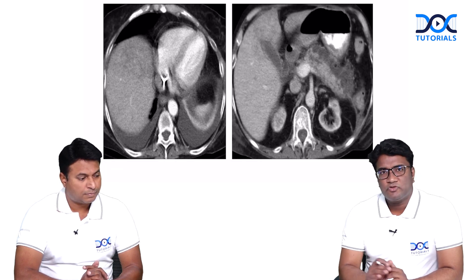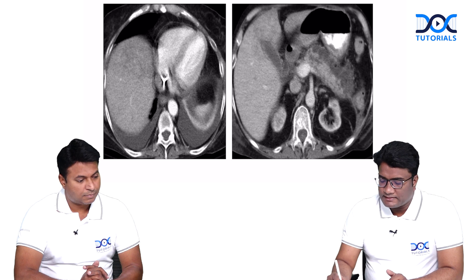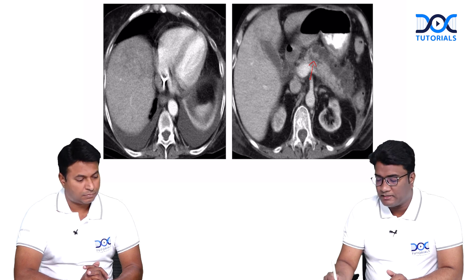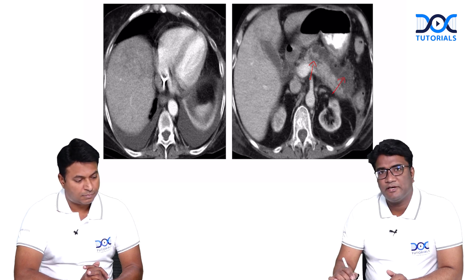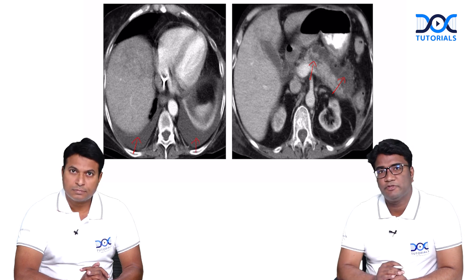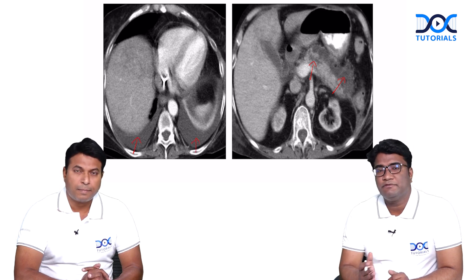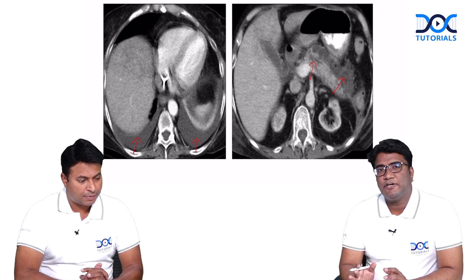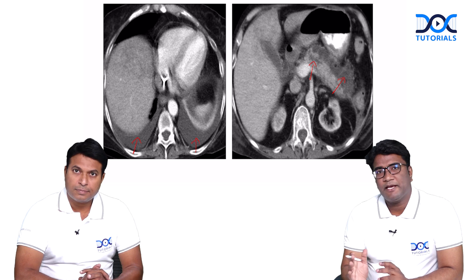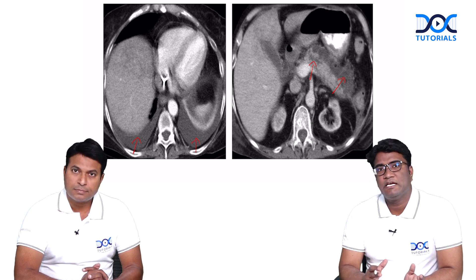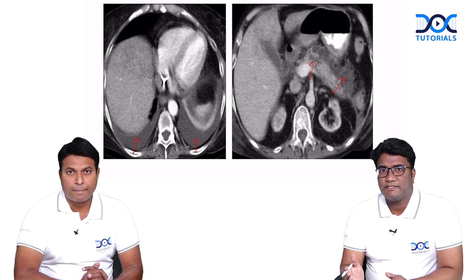Now look at this image — it shows the same inhomogeneous enhancement with areas lacking enhancement. There are some collections around the pancreas and some third-space collections. You can also see pleural effusions, which are indicative of more severe complications developing in pancreatitis. When you see such non-enhancing areas, peripancreatic fluid collections, pleural effusions, and ascites, all of these suggest a severe type of pancreatitis.